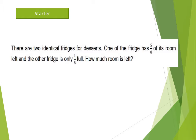There are two identical fridges for desserts. One of the fridge has 5 out of 8 of its room left and the other fridge is only 1 out of 8 full. How much room is left?